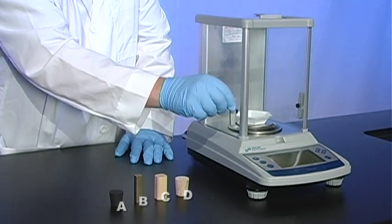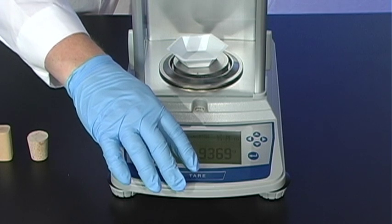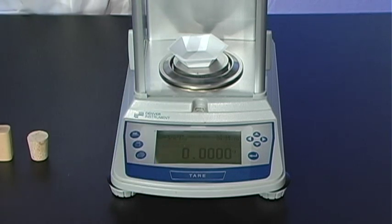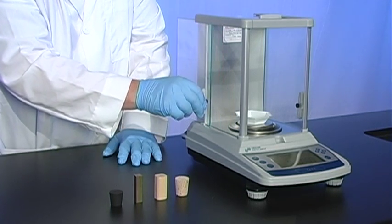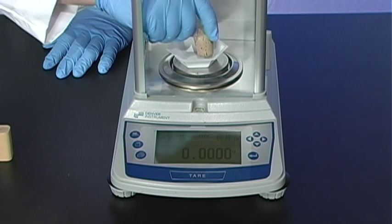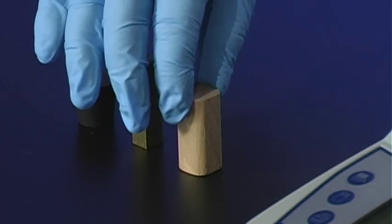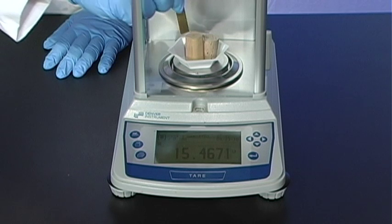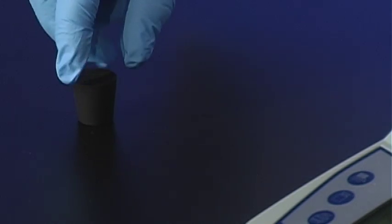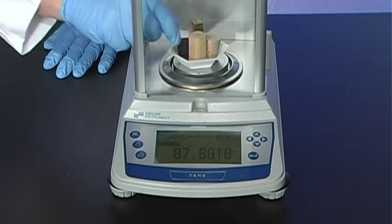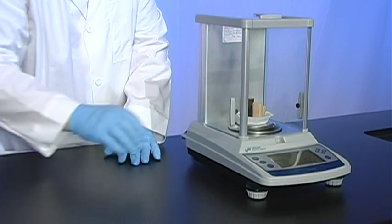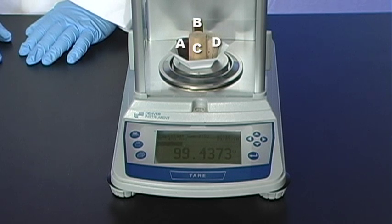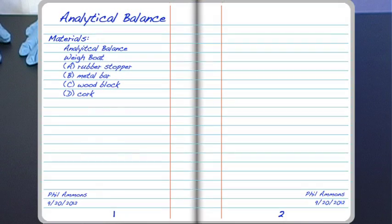First, place the weigh boat onto the balance pan and close the glass doors. Press the tare button to zero out the weigh boat. Next, weigh all four pieces together. Close the glass doors. The combined mass of all four objects is 99.4373 grams. This is called the full-scale value. Record this value in your lab notebook.